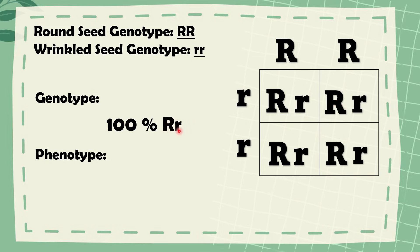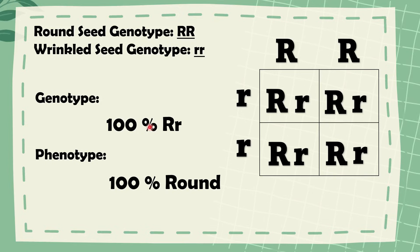Now let us find the phenotype. We have here 100% dominant R and recessive R. What does it mean — does it mean round seed or wrinkled seed? It means 100% round seed, because we have a dominant allele that is always expressed. That's how you cross using a Punnett Square.